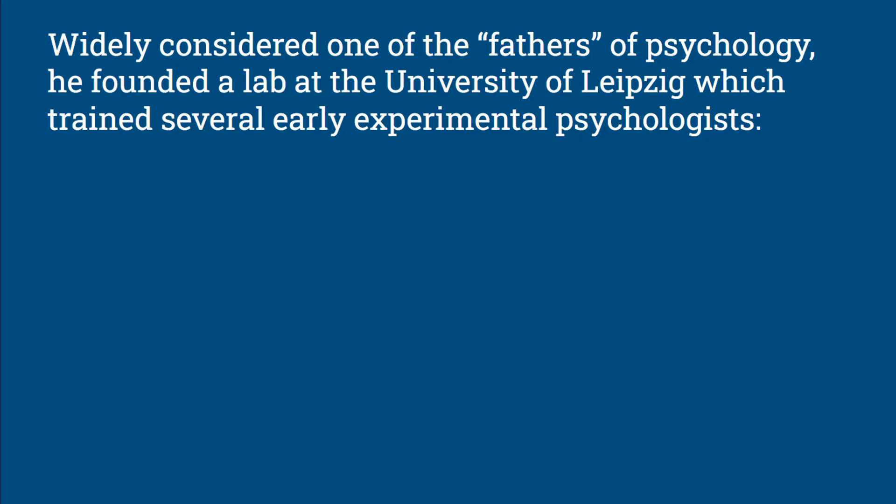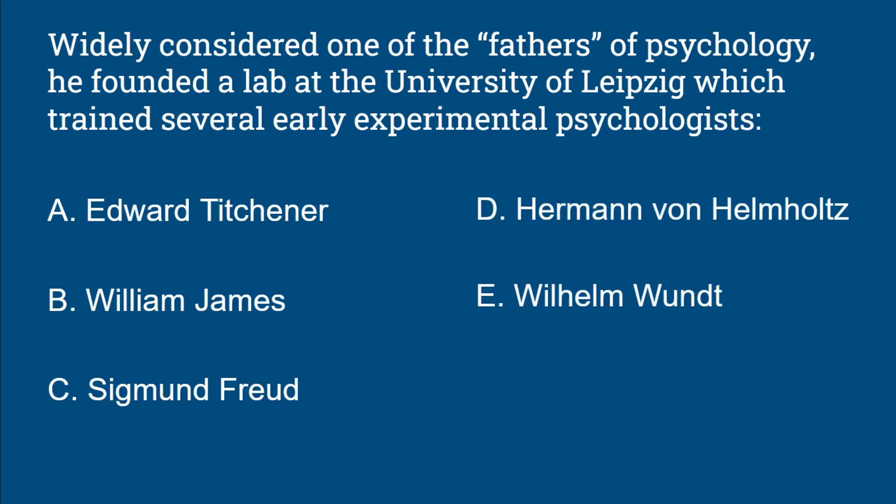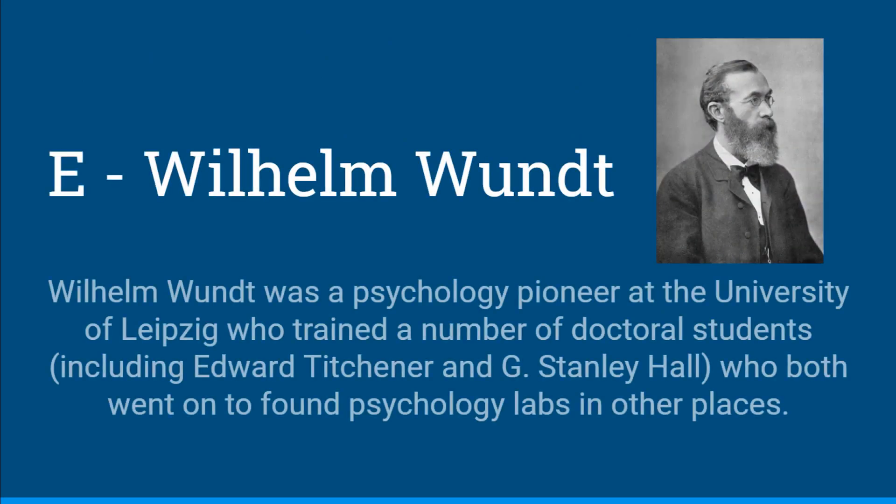Widely considered one of the fathers of psychology, he founded a lab at the University of Leipzig which trained several early experimental psychologists — is this Edward Titchener, William James, Sigmund Freud, Hermann von Helmholtz, or Wilhelm Wundt? This is Wilhelm Wundt. Wundt was a pioneer in psychology — he's actually the first person to call himself a psychologist. He founded a lab at the University of Leipzig, where he trained a number of doctoral students, including Edward Titchener and G. Stanley Hall, who both went on to found psychology labs in other cities.